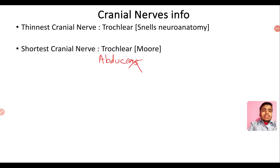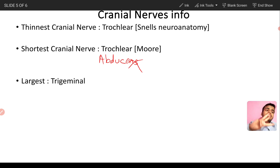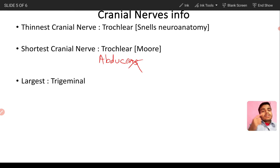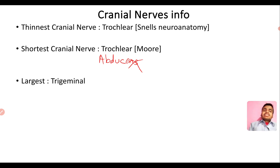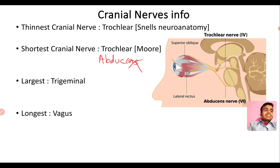The shortest cranial nerve is the trochlear nerve. The largest cranial nerve is the trigeminal nerve. The trigeminal nerve has three branches: ophthalmic, maxillary, and mandibular. These are the major cranial nerves to know, along with their branching patterns.